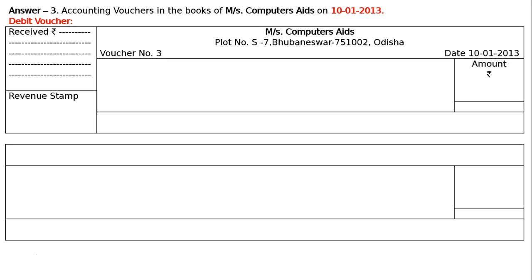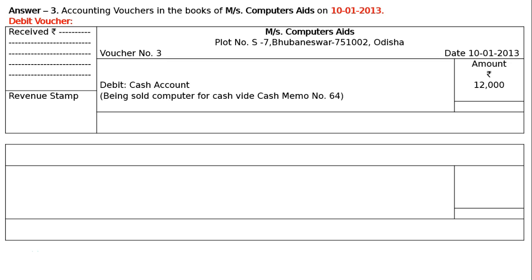You will use the modern method. The modern method tells us increase in asset is debited. Cash is coming in by selling computer. Hence debit cash account rupees 12,000 in the amount column. And write down a narration explaining this debit — that is, being sold computer for cash, vide cash memo number 64. And total this amount column, that is rupees 12,000. Write down the signature of the manager towards the left side, and towards the right side, SD manager and SD accountant.